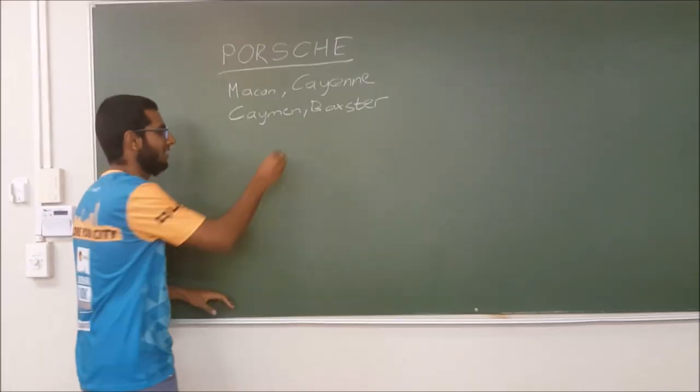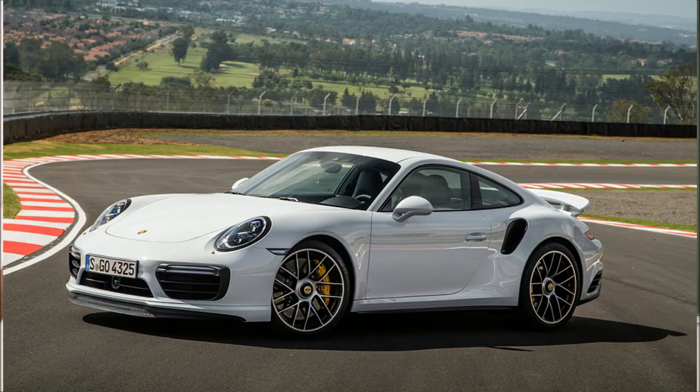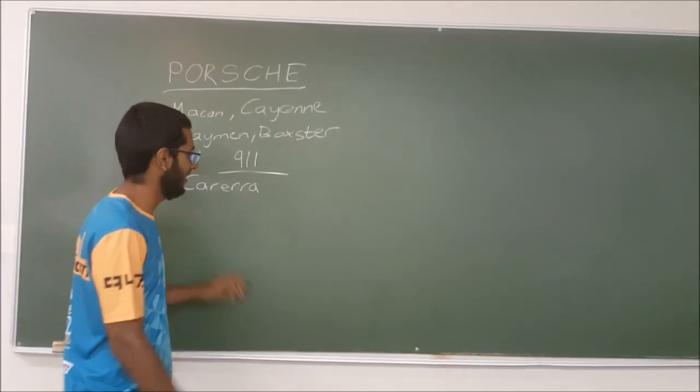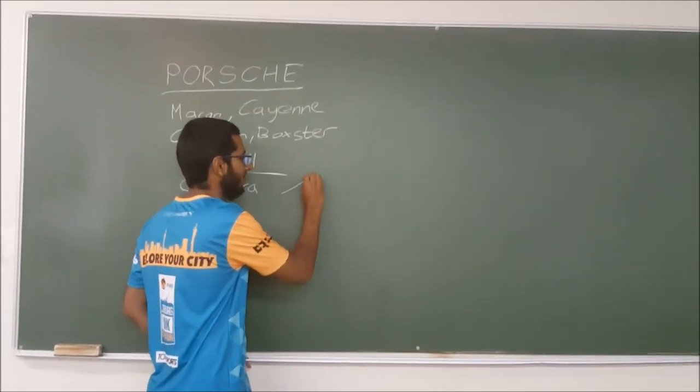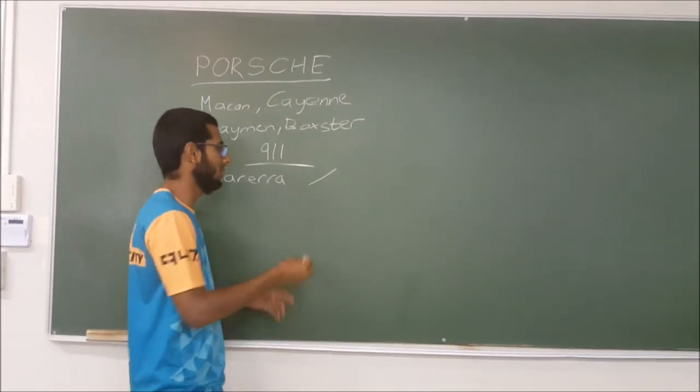Then moving on to the 911 range, this is what you think of when you think of Porsche. So your base one is the Carrera, then from there you get the normal, regular Carrera which is like a two wheel drive.